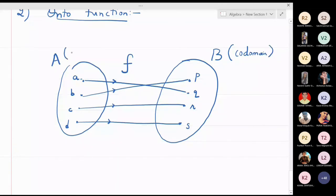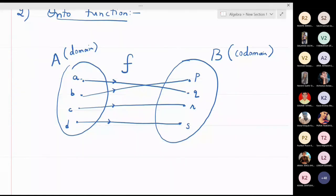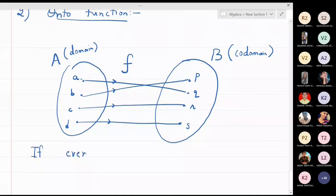I will go into the codomain and check if every element in the codomain has a pre-image in the domain. If that is true, then that function is called an onto function. Definition: if every element in the codomain has a pre-image in the domain, then f is said to be onto.